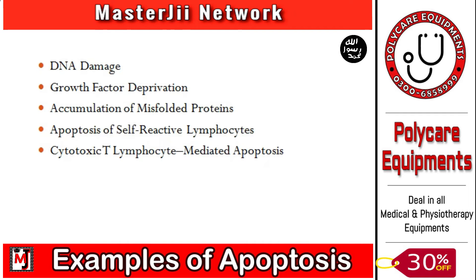If apoptosis does not occur in self-reactive lymphocytes, the consequence in our body is autoimmune disease — where the immune system attacks the body's own cells. But if apoptosis of self-reactive lymphocytes functions properly, autoimmune disease will not develop.